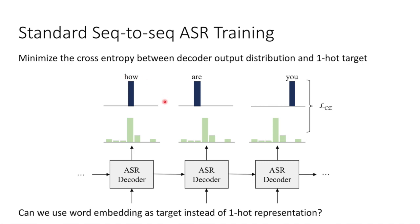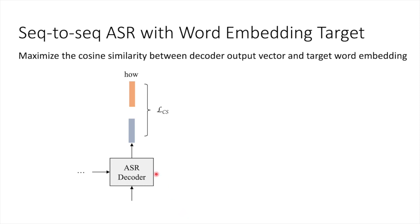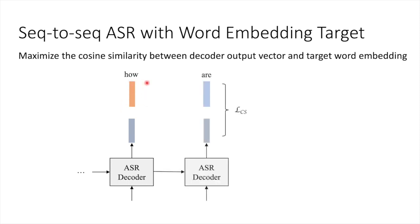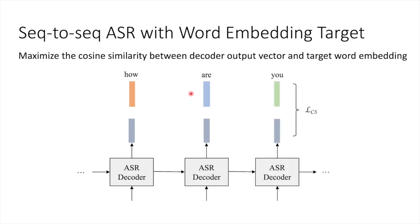The question now is: can we use word embedding as the target instead of one-hot representation of words? If we set the word embedding as the target, for each time step the ASR decoder outputs a vector, and our goal becomes maximizing the cosine similarity between the decoder output vector and the target word embedding vector. This also goes on for each time step.